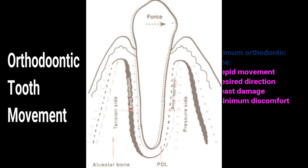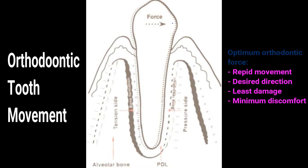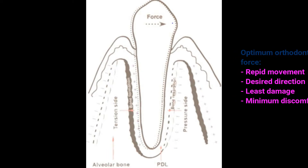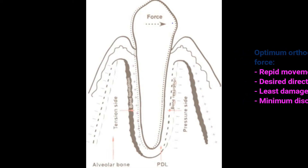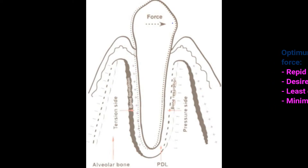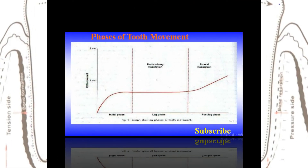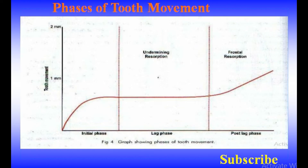For this we use optimum orthodontic force. Optimum orthodontic force is one which moves the teeth most rapidly in the desired direction, with the least possible damage to the tissues and with minimum patient discomfort. Now let's study the phases of tooth movement when orthodontic force is applied.